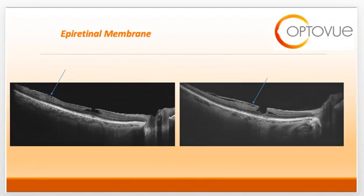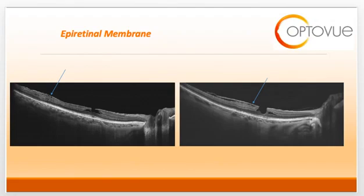Another entity in the topic of vitreo-retinal interface disorders is the formation of an epiretinal membrane. An epiretinal membrane is a thin hyperreflective sheet that overlies the internal limiting membrane. It can result from uveitis, retinal tears, or retinal detachments. In the setting of a posterior vitreous detachment, it usually has something to do with residual pieces of the posterior hyaloid that form a scaffolding or proliferation of cellular material on the surface of the macula. These OCT scans show that hyperreflective thin boundary at the anterior surface, which the blue arrows are pointing at.